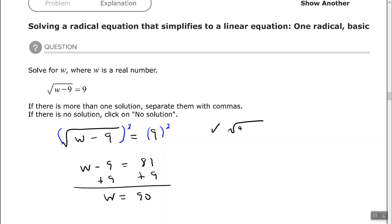And we can go back and check that in our original problem. If we want to, just to make sure. So 90 minus 9. The square root of 90 minus 9 should equal 9. 90 minus 9 is 81. And yes, the square root of 81 does equal 9. So it checks out.